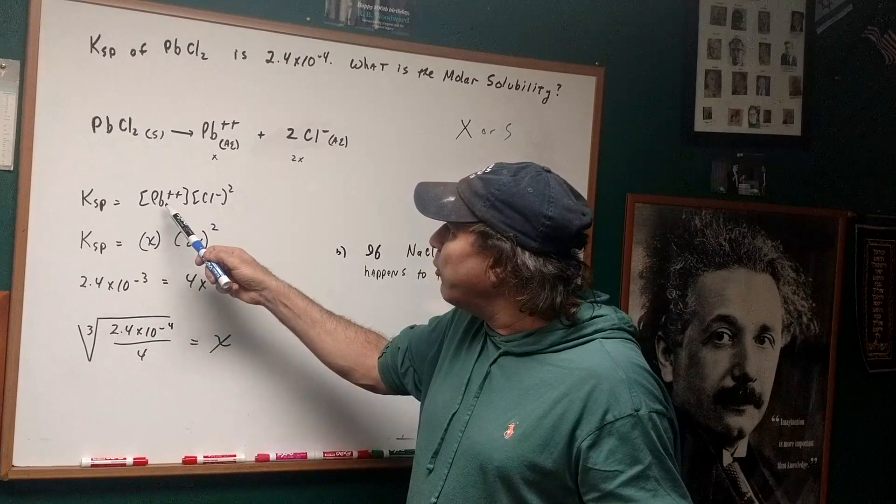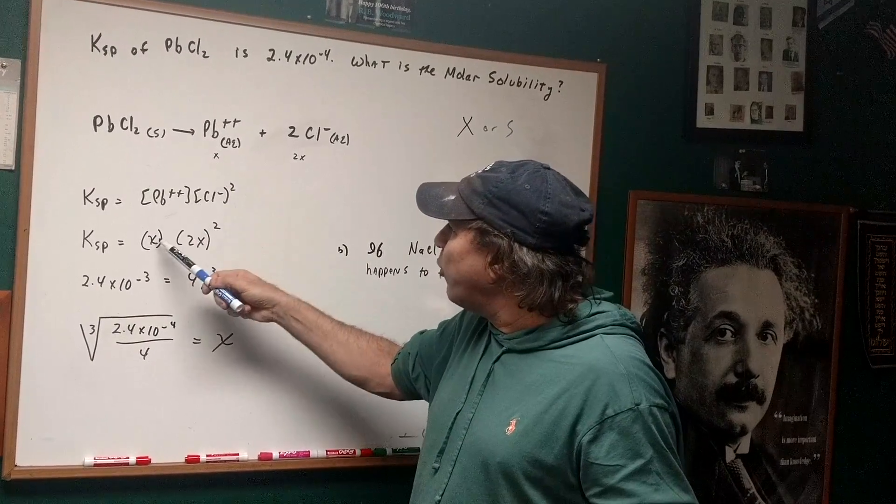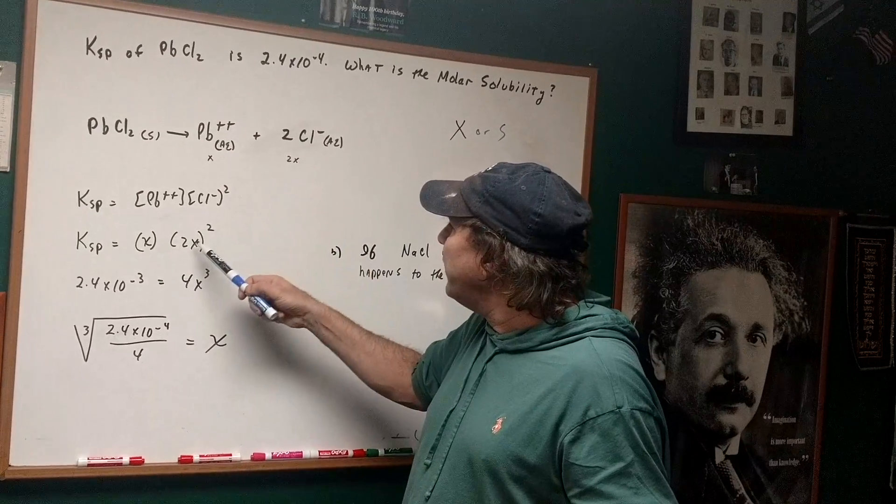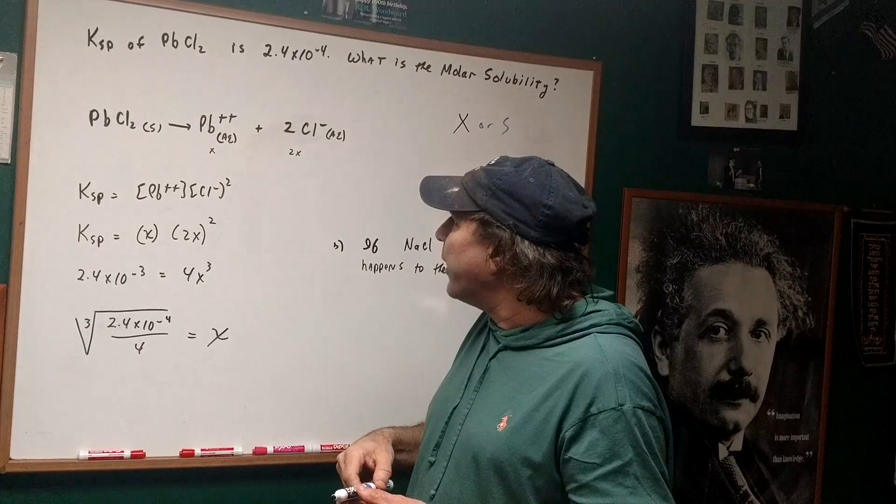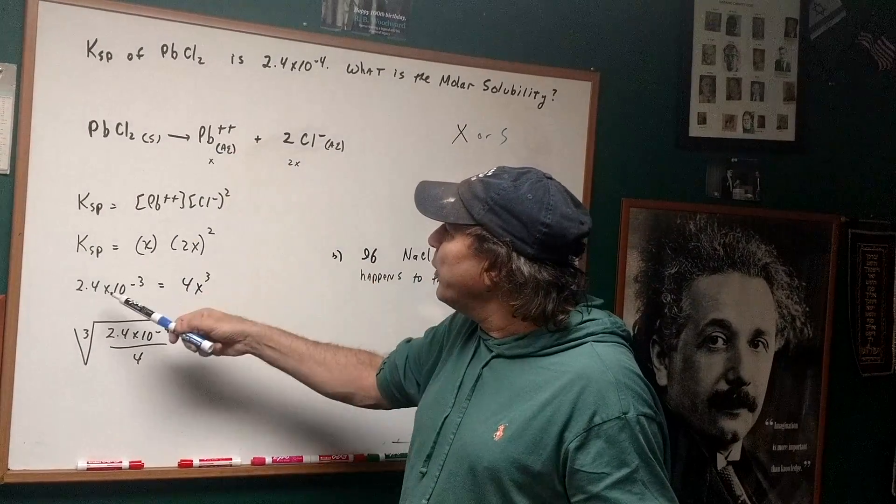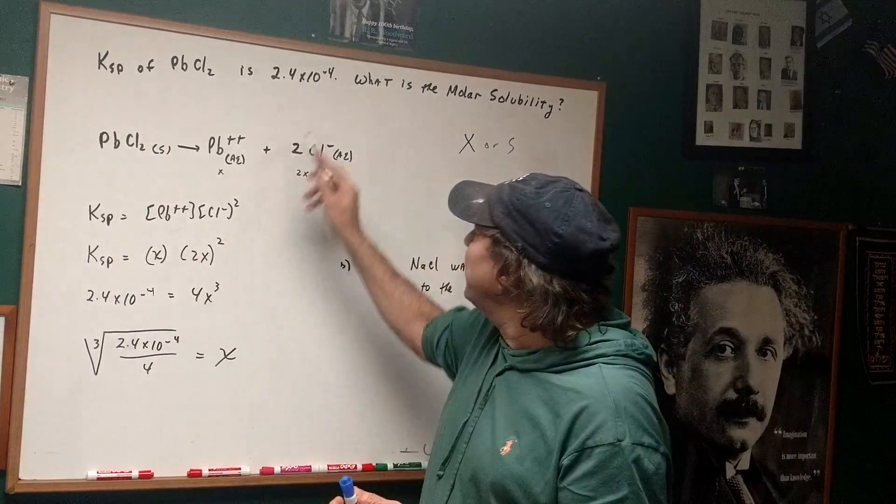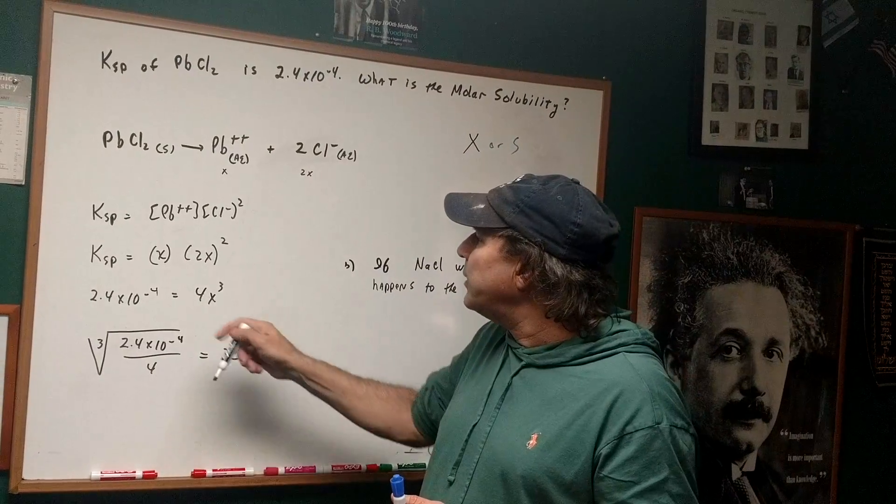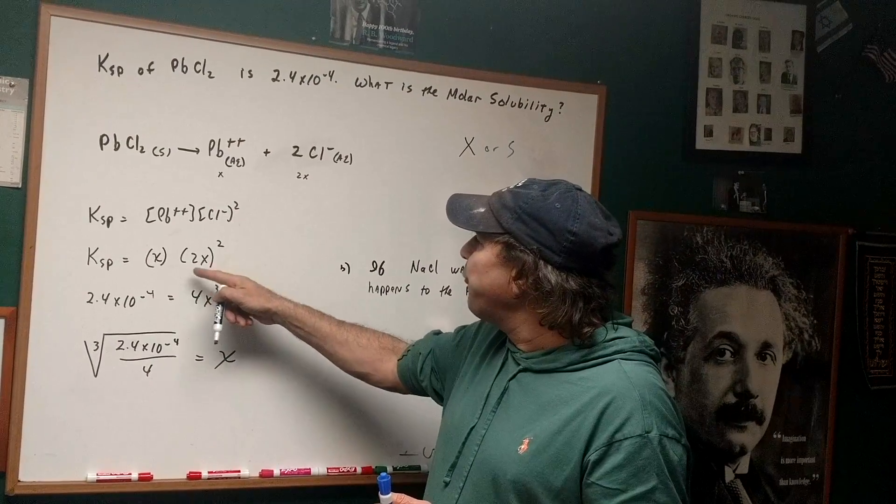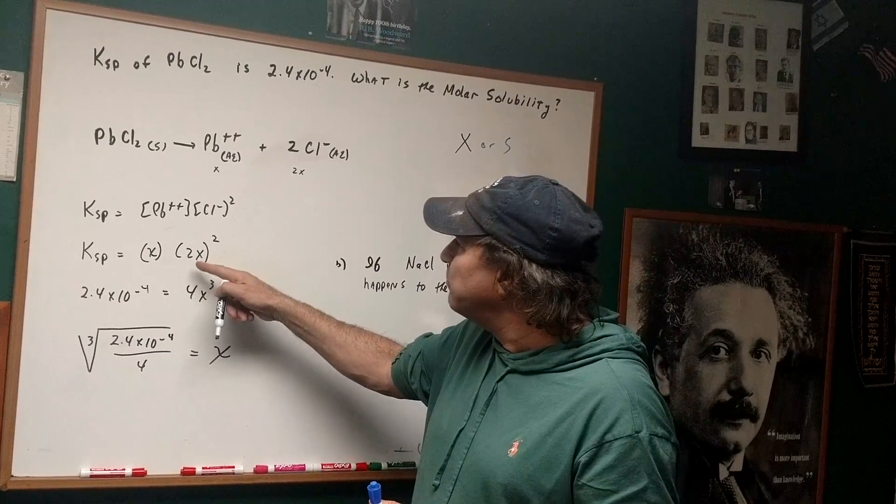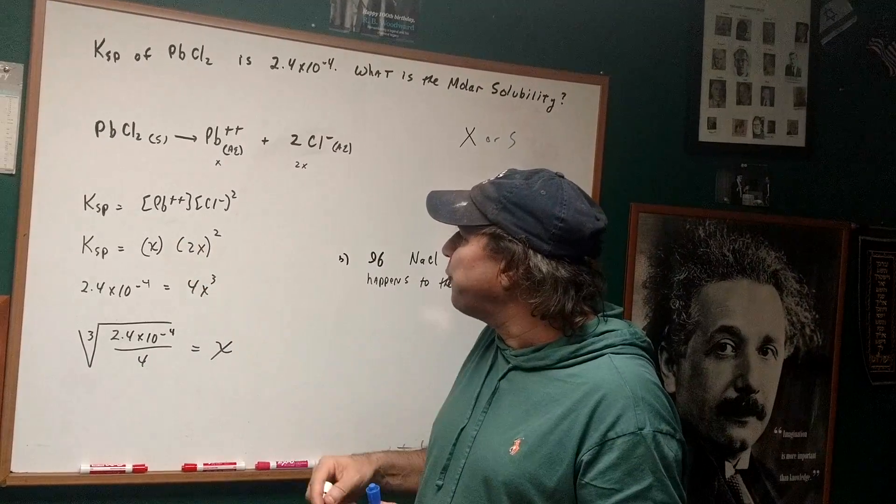So what I'm going to do is I now go in—the Pb we called x. The chloride is 2x, and I squared it. Putting the number in, we get 2.4 to the minus 4. So we're going to get 2.4 × 10^-4 equals 4x^3, because this becomes 2x squared times x is 4x^3.